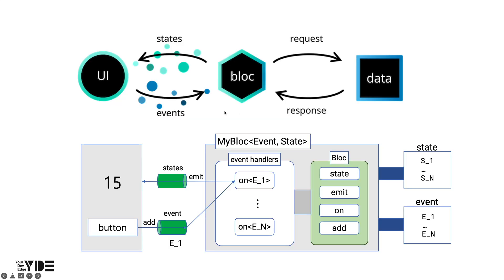Let's take a closer look at Bloc. Bloc is a class that can be extended to manage any type of state. To use it in the app, define state and event and create a Bloc that manages the state. We will call it MyBlock here. When creating MyBlock, you must specify the event type that causes state change and the type of state it manages. MyBlock, which extends Bloc, receives the event dispatched to the event stream by using the add function provided by Bloc in the UI, and calls the onEventHandler corresponding to the event type.